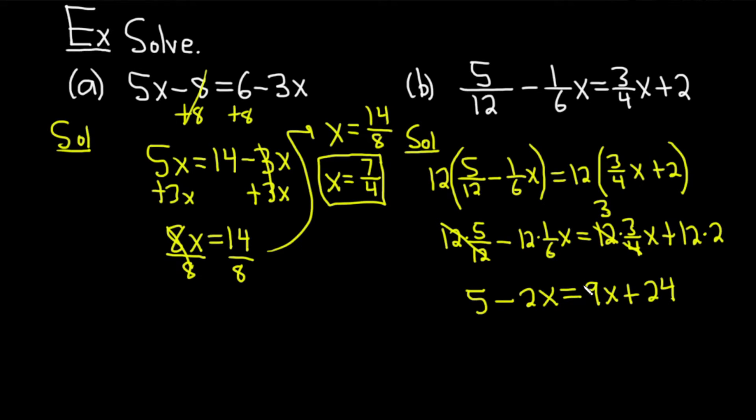Now let me show you how I would do it. I would still write the 12 because it's too hard to do it in your head. Watch this: 12 times 5/12—well, the 12s cancel, so you get 5. 12 times -1/6x—well, 6 goes into 12 twice, so you just get -2x.